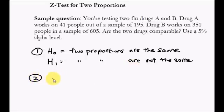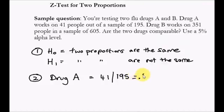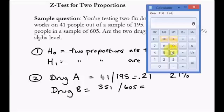The next step is we want to write our proportions out. Drug A is 41 out of 195. 41 out of 195 is 0.21, that is 21%. And drug B was 351 out of 605, that's 0.58 or 58%.